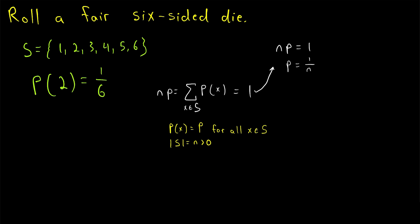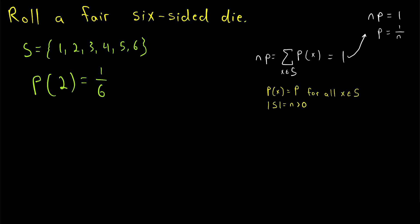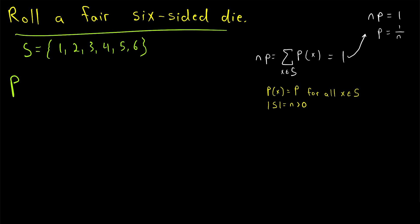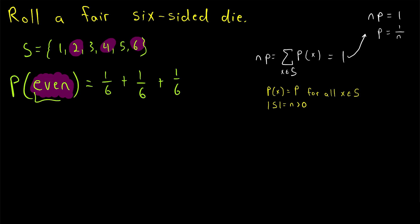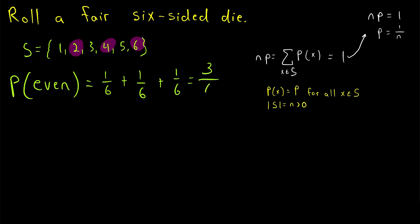Knowing this rule is true, we can solve lots of simple problems involving experiments with equally likely outcomes. For example, if we roll a fair six-sided die, what's the probability that we roll an even number? We have to ask: how could this event happen? We could roll a 2, which has a probability of 1 over 6, or we could roll a 4, which also has a probability of 1 over 6, or we could roll a 6, which again has a probability of 1 over 6. The probability of rolling an even number is just 3 divided by 6.